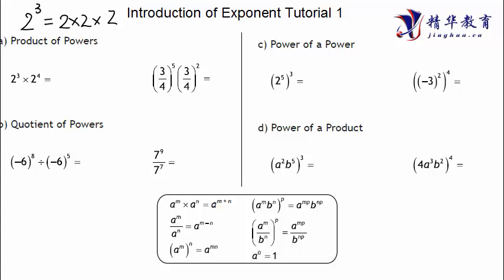I assume you already know about exponentials from the green line. So what we have learned so far is additions, subtractions, multiplications, and divisions — and the exponent is the fifth part you're going to learn. Exponent is just a quick way to write out some number times itself by how many times. For example, 2 to the power of 3 means 2 times itself three times. If you have trouble understanding this, please check the green line videos.